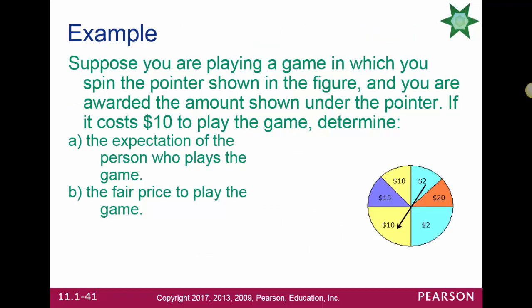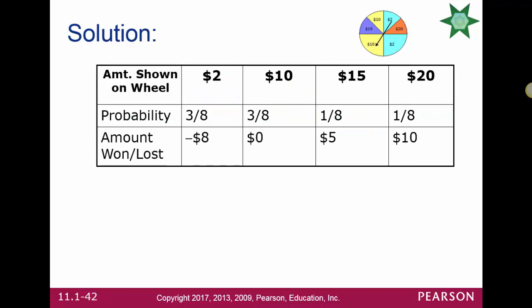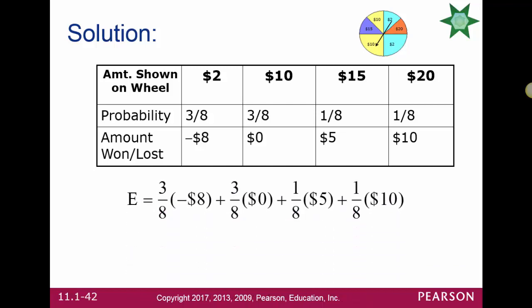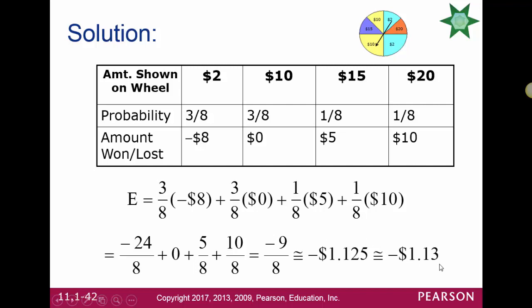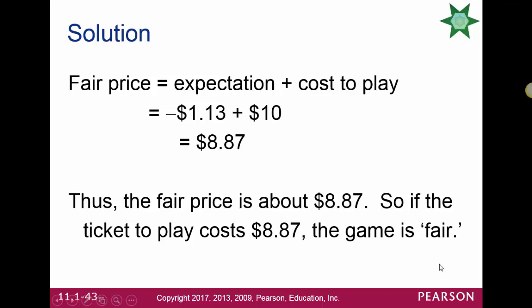Suppose you spin a pointer and are awarded the amount shown. There are four amounts: $2, $10, $15, and $20, with probabilities 3/8, 3/8, 1/8, and 1/8 respectively. It costs $10 to play, so net gains are: −$8, $0, $5, and $10. Calculating expectation using the formula gives negative $1.13. For the fair price, we add the expectation to the cost to play: −$1.13 + $10 = $8.87 is the fair price to play the game.